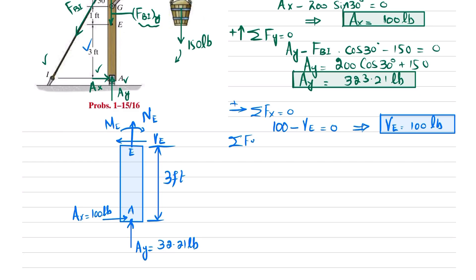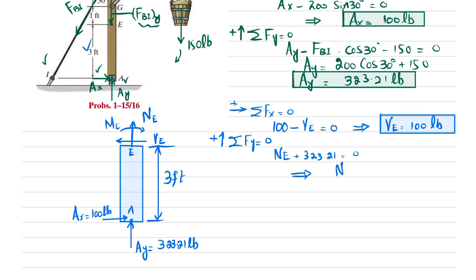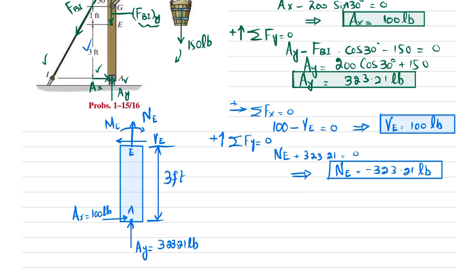Applying the equilibrium condition: sum of all forces along the y-direction equals zero, taking upward forces as positive. We have Ne and Ay as upward forces. So Ne plus 323.21 equals zero, giving Ne equals negative 323.21 pounds. Since Ne is negative, our assumed direction of Ne upward was wrong, so Ne should be directed downward.